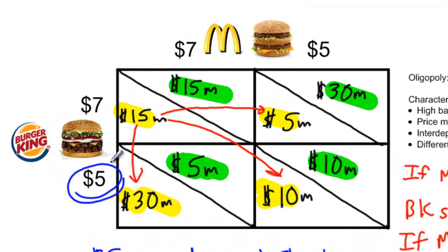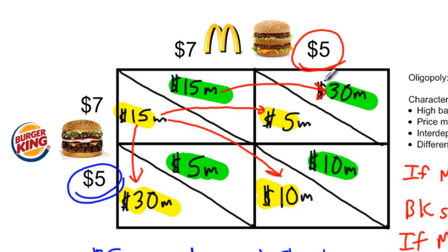Since the payoffs for McDonald's are identical to those for Burger King, five dollars is also a dominant strategy for McDonald's. If Burger King charges seven dollars, McDonald's can earn more economic profits by lowering its price to five dollars — in fact experiencing a doubling of its economic profits. And if Burger King charges five dollars, McDonald's can again earn a greater level of economic profits by also charging five dollars. So in this game, both firms have a dominant strategy of charging five dollars.